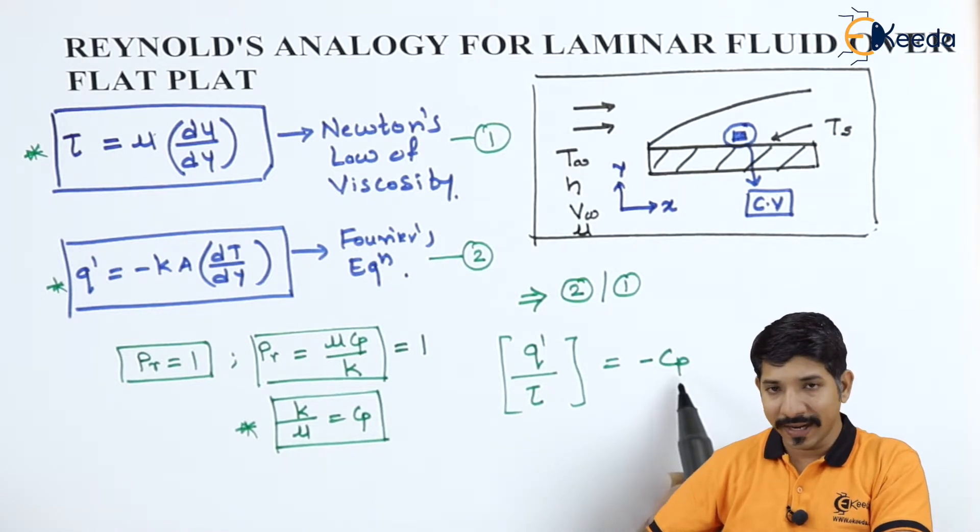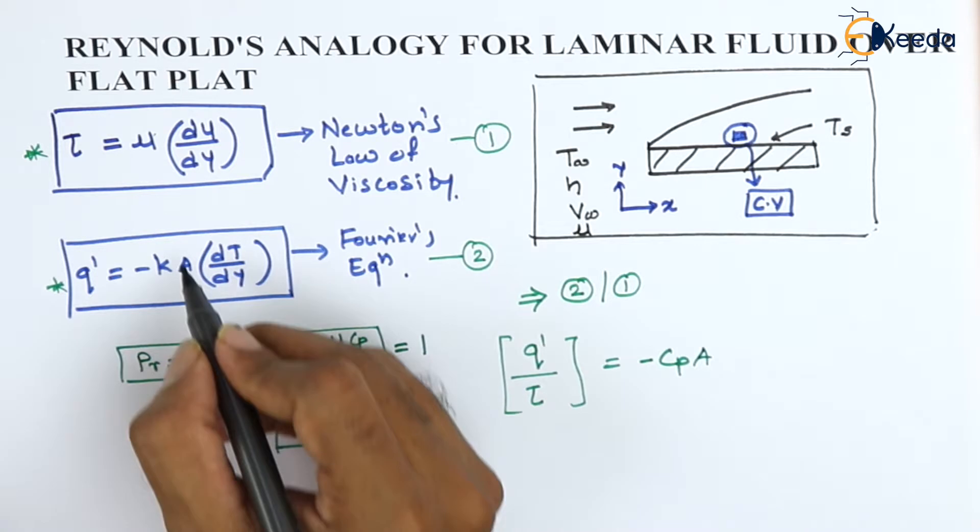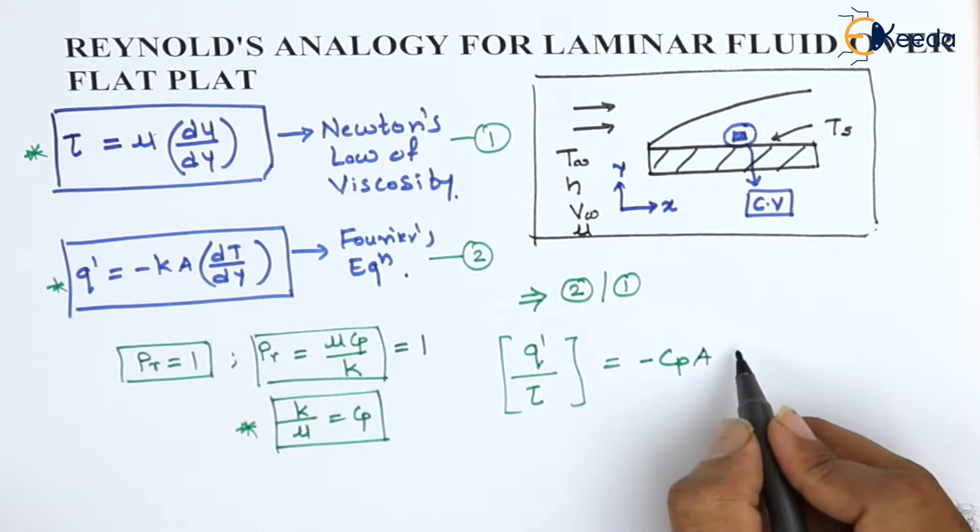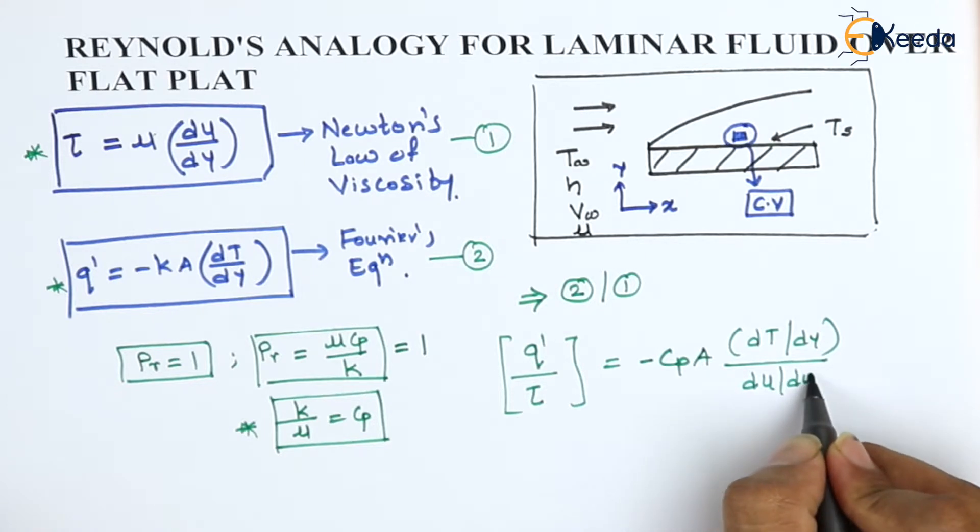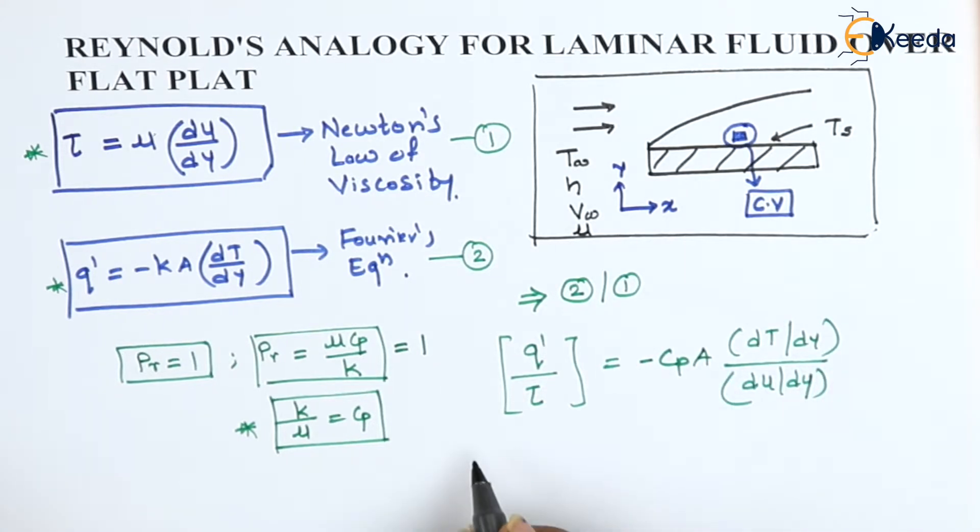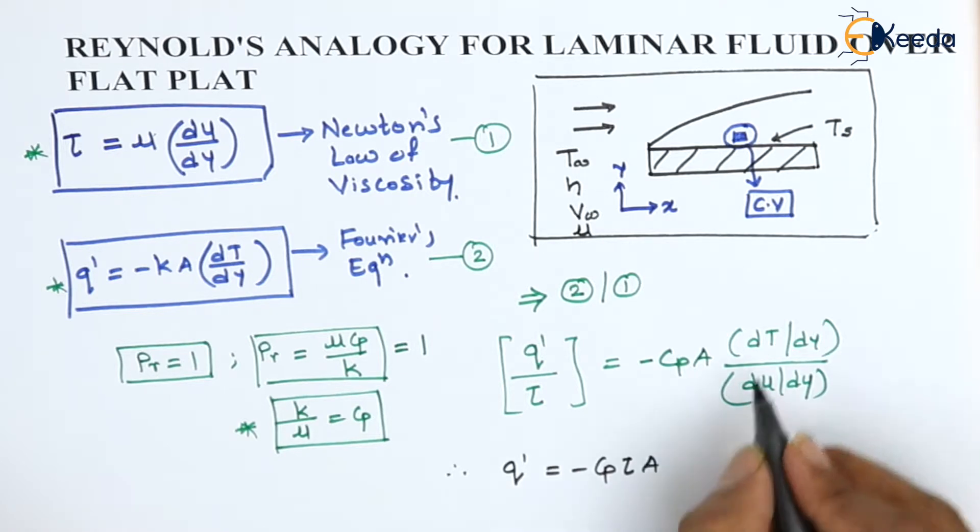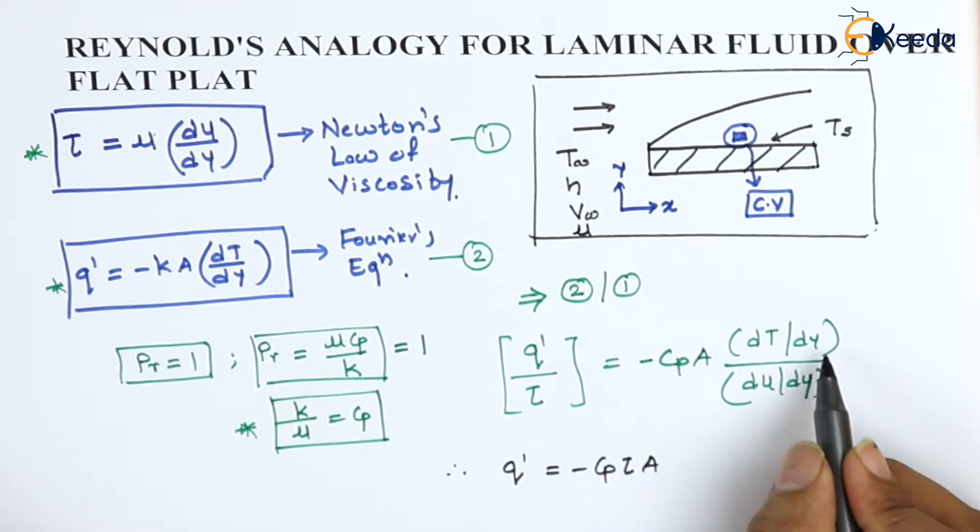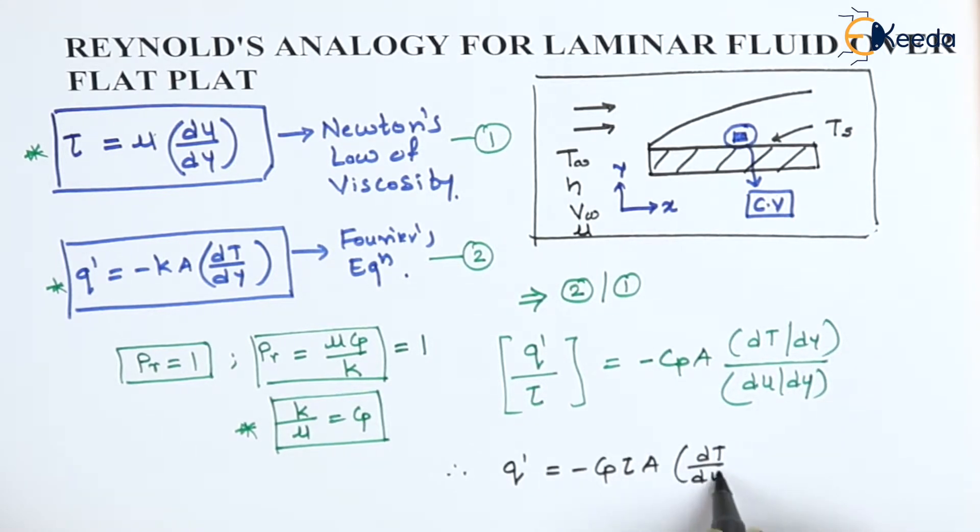And then the left over parameter such as the area. And here what do we have? We have dt by dy and in the denominator we have du by dy. So if you further simplify, I can write down this as q' is equal to minus Cp tau into area. Now this can be written as instead of dt by dy divided by du by dy, I can write this as dt by dy multiplied by dy upon du. So at the end I can write this as dt by du itself.